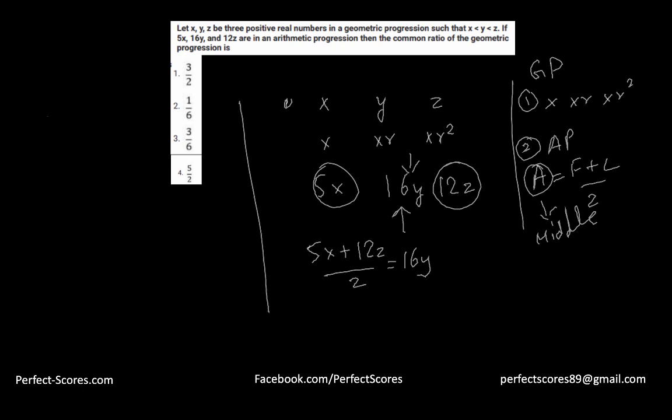So from here what do we get? We get 5x plus 12z is equal to 32y. That is what we get. Now the question is asking us, what is the common ratio of the geometric progression? Which means the question is asking us the value of r. And what we can do is we can just substitute these expressions. So 5x would just remain 5x, and 12z would actually become 12xr squared, and 32y will become 32 times xr. So then this whole thing turns out to be, we can actually eliminate x because it's there in every equation.